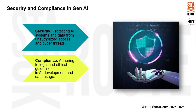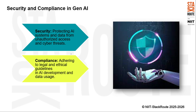Next are security and compliance, other critical aspects in Gen AI. Security involves protecting AI systems and data from unauthorized access and cyber threats, which is crucial for maintaining the integrity and reliability of AI technologies. Compliance in AI refers to adhering to legal and ethical guidelines in both the development of AI technologies and the usage of data, ensuring AI systems are built and used in ways that comply with relevant laws, regulations, and ethical standards.